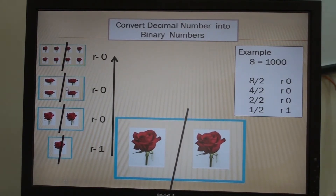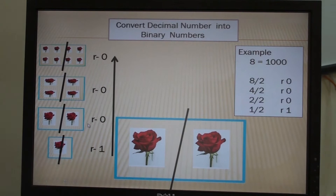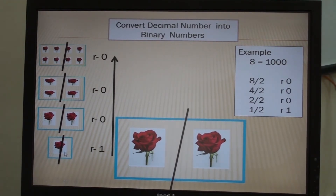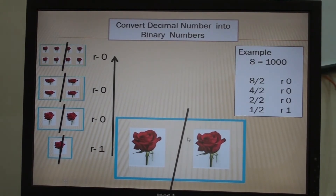If 4 is divided by 2, the answer will be 2, but there is no remainder, so write 0. If 2 divided by 2 is 1, still there is no remainder. Then the last one: if 1 divided by 2 is 0.5, but instead you will write the remainder as 1. Rewrite the answer from down to the highest.